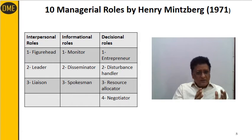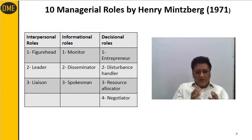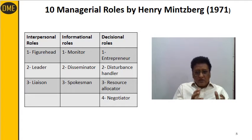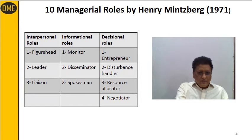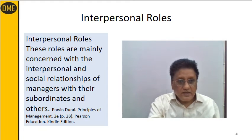Interpersonal roles have three: figurehead, leader, and liaison. Informational roles have three: monitor, disseminator, and spokesperson. Decisional roles have four: entrepreneur, disturbance handler, resource allocator, and negotiator. Let us discuss the managerial roles as leader, liaison, and figurehead.